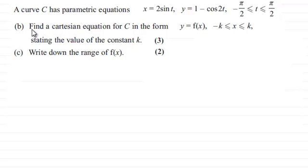And in part B we have to find a Cartesian equation for C in the form y equals f(x), where x is greater than or equal to minus k but less than or equal to k, stating the value of the constant k for 3 marks. And then in part C write down the range of f(x) for 2 marks.